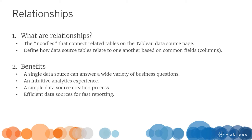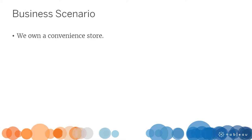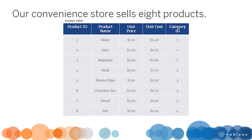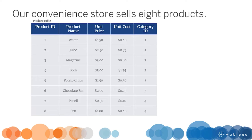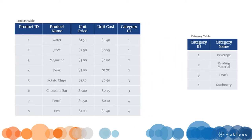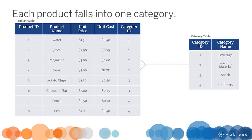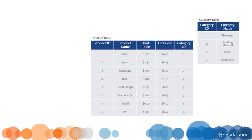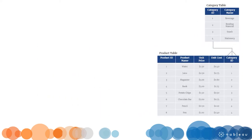Before jumping into Tableau Desktop, let's familiarize ourselves with our business scenario. We own a convenience store and want to analyze our transaction data to answer business questions. Our convenience store sells eight products. Each product has a unique product ID, a product name, unit price, and unit cost. Each product falls into one category, and each category has many products. The line between the tables signifies this one-to-many relationship. The two tables relate based on a common field, category ID.